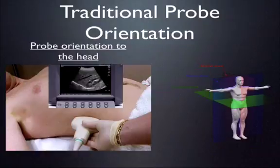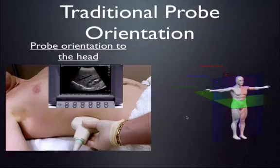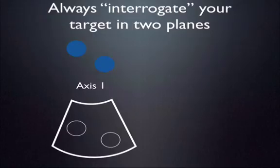The next plane is still a long axis plane with the probe indicator pointing toward the patient's head, but because of how it's positioned on the side of the body, it becomes a coronal plane — also described as a lateral long axis view of the abdomen. The key takeaway here is that it's always important to interrogate your target in two planes.